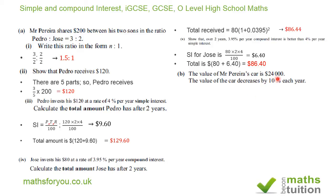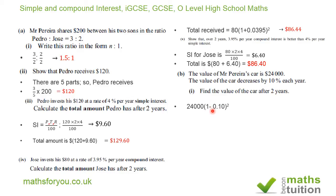The value of Mr. Pereira's car is $24,000. The value decreases by 10% each year — that's depreciation. The multiplying factor is 1 minus 0.10, which is 0.9. So after 2 years: 24,000 multiplied by 0.9 squared gives a value of $19,440. The car has depreciated by just over $4,500 in 2 years.